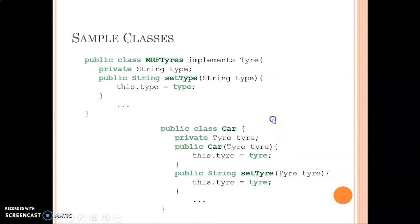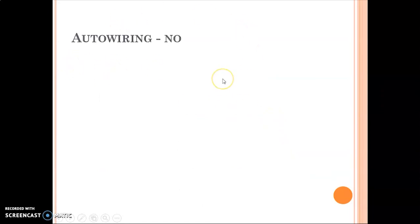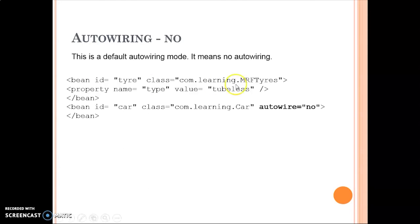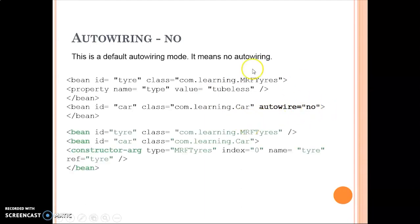The first type of auto-wiring we are going to talk about is 'no' auto-wiring. This is the default mode, meaning no auto-wiring is applied. Everything needs to be done manually. You can mention autowire equals to 'no', but this is not mandatory — if you skip this attribute entirely, it automatically means there is no auto-wiring.